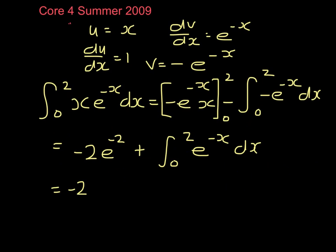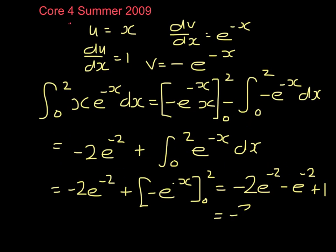So that's minus 2 e to the minus 2 plus minus e to the minus x from 0 to 2. So that's minus 2 e to the minus 2, so that's minus e to the minus 2. And then if we take away whenever we substitute in the 0, we're going to get e to the power 0, which is 1, so I have plus 1. So that's minus 3 e to the minus 2 plus 1.